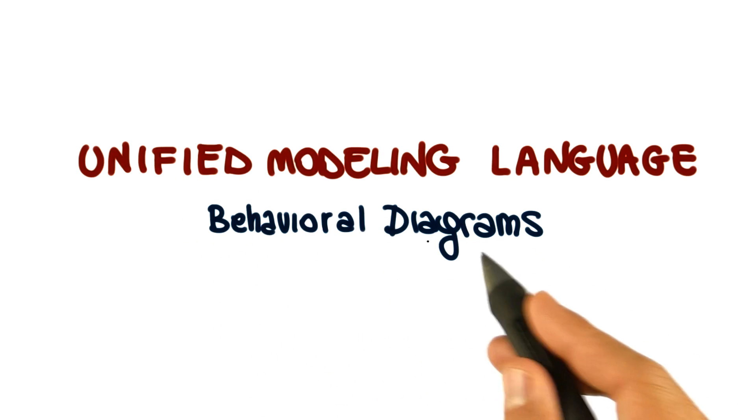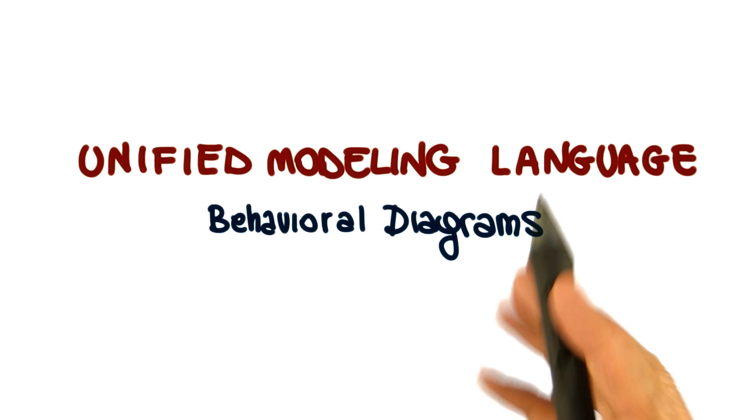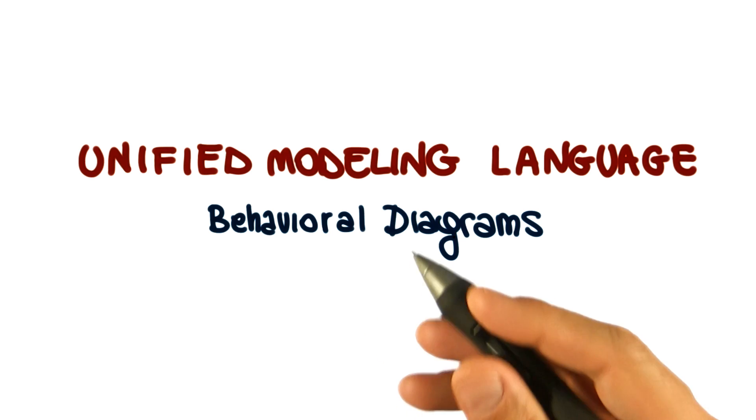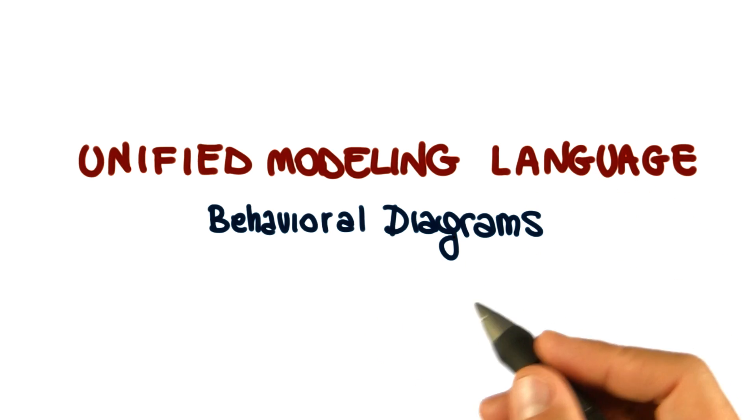We now discuss UML's behavioral diagrams. Those diagrams that have to do with the behavior, the dynamic aspects of the system, rather than the static ones.